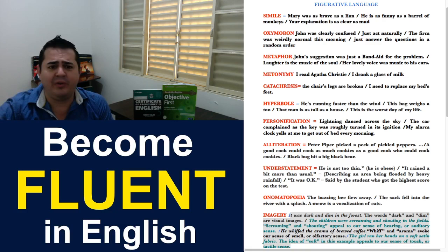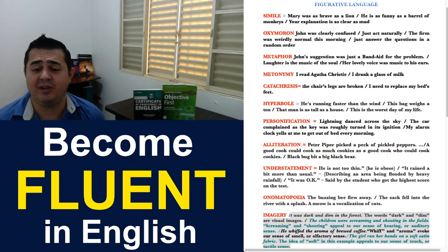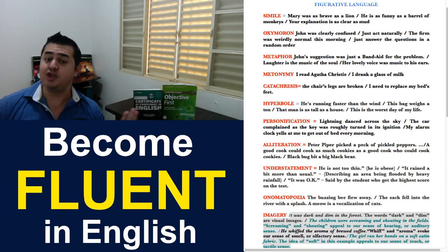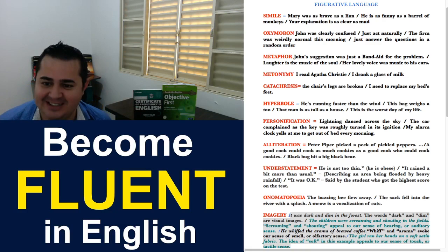Now, the next one, understatement, is when you try to make something less important, or less strong, or to sound less bad than what it really is. For example, he's not too thin. You know, he's obese. So, instead of saying he's very fat, you say, well, he's not too thin. You're minimizing, you're softening the situation.